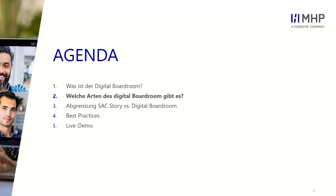Man muss bedenken: Wenn ich modellübergreifend Dimensionen verknüpfen möchte, müssen diese zusammenpassen. Wenn ich einen Flat-File-Upload in die SAC mache und eine Regionshierarchie habe, muss diese mit der Regionshierarchie auf dem ERP- oder BW-System zusammenpassen – sonst kann ich Filter nicht durchleiten. Durch die Import-Schnittstelle kann man jegliche Datenquellen anziehen und auch völlig fremdartige Daten zusammenfügen, zum Beispiel Dun & Bradstreet- oder Nielsen-Daten per Upload laden und mit anderen Daten im Datenmodell verjoinen.